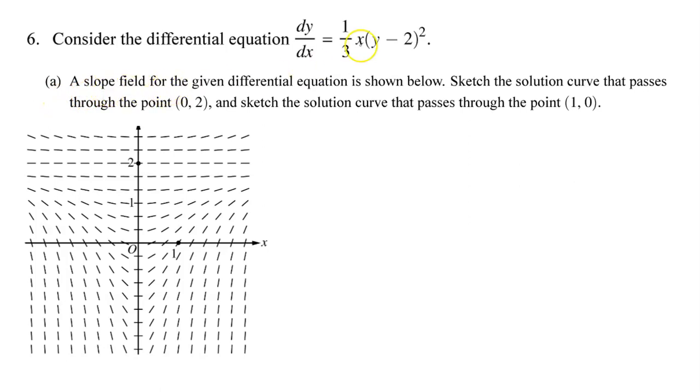Part A. A slope field for the given differential equation is shown below. Sketch the solution curve that passes through the point (1,0) and sketch the solution curve that passes through the point (1,0). I see the point right here, and this is sitting right on a string of slope lines that go horizontally through the point. So this is the solution curve that passes through the point (1,0).